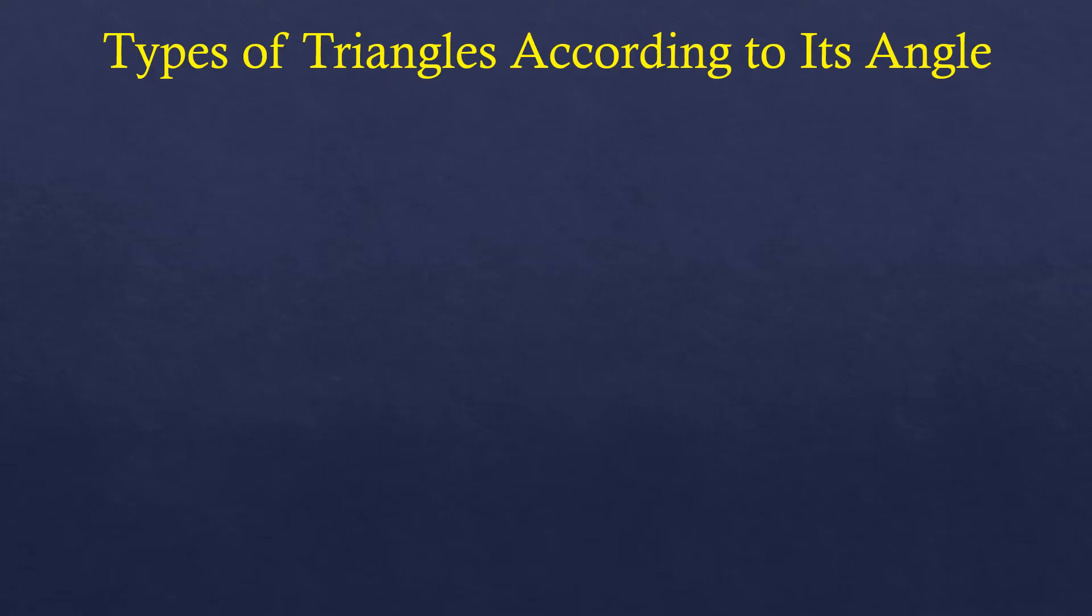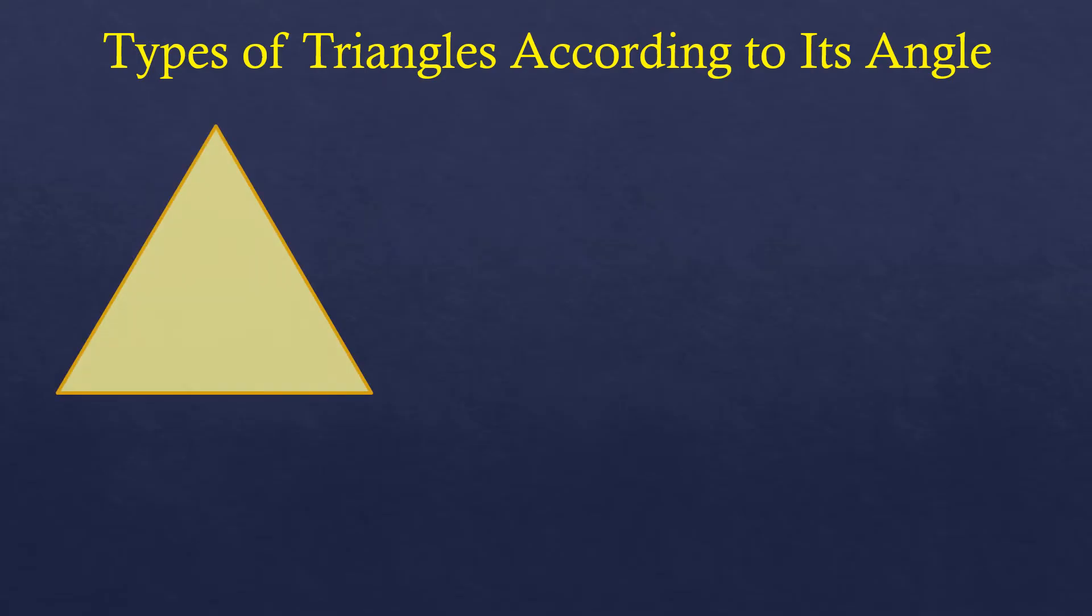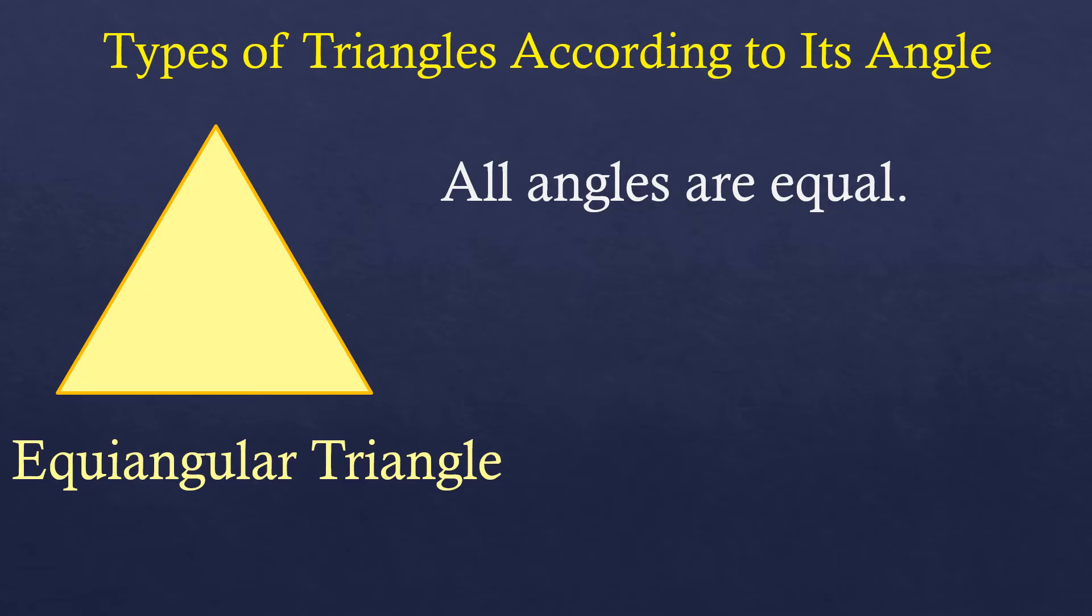Now let's move to types of triangles according to their angles. If we have this type of triangle where all angles are equal, we call it an equiangular triangle.